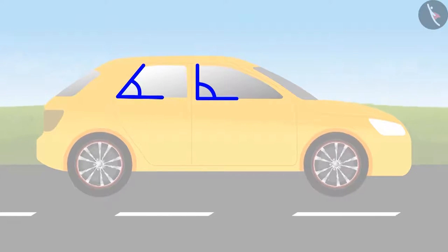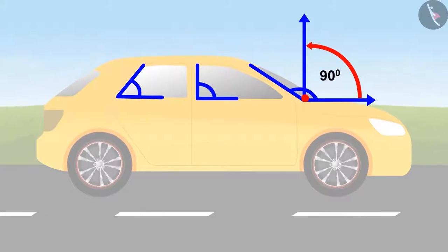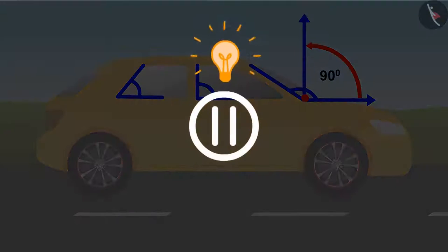'Let's come back to the car. In the front window I can see an angle which is equal to a right angle. And between the front part of the car and the front glass there is an angle which is larger than a right angle. You can stop this video and try to find out more angles here.'